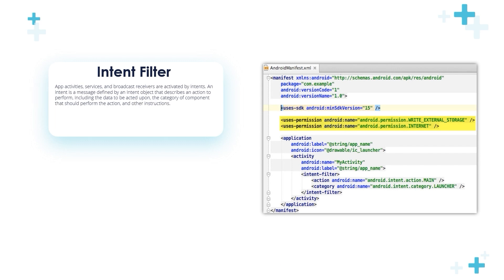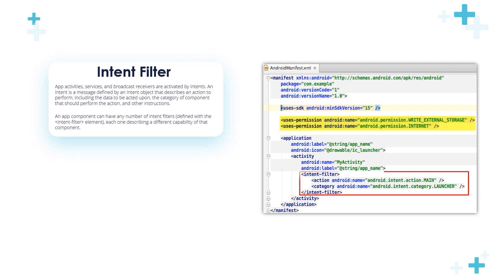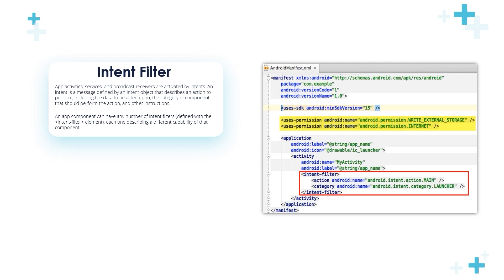Intent filters — app activities, services, and broadcast receivers are activated by intents. An intent is a message defined by an intent object that describes an action to perform. Intent filters include the data to be acted upon, the category of component that should perform the action, and other instructions. An app component can have any number of intent filters defined with the intent-filter tag element, each one describing a different capability of that component.